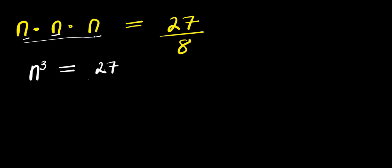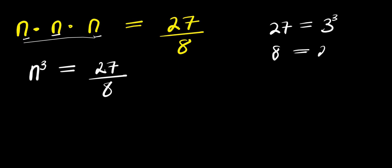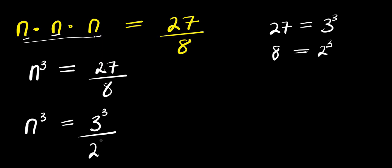So we have n³ equals 27 divided by 8. We can write 27 as 3 to the power of 3, and 8 as 2 to the power of 3. So we have n³ equals 3³ divided by 2³.